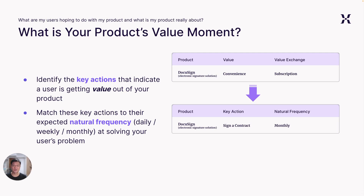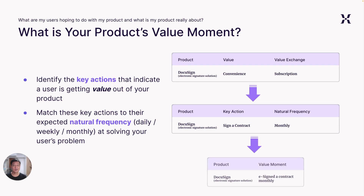The expected natural frequency of this action would perhaps be monthly, since companies would generally tend to execute one contract per month. One way to think about natural frequency is that if you remove your solution, what would be the typical frequency whereby your users would be doing this same action through other means. As a result, DocuSign's value moment of convenience would be an e-sign contract on a monthly frequency.